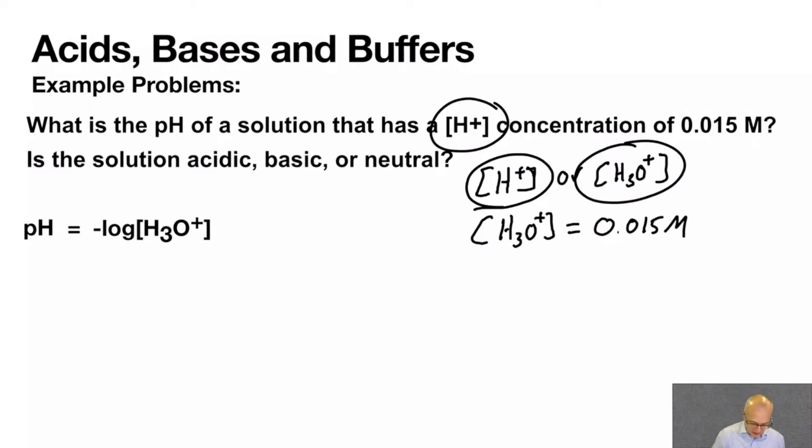Calculate pH. All you've got to do is plug it in to the formula. Equals negative log of 0.015 molar. Grab your handy-dandy calculator. Let me use my phone calculator. So I have negative log. And I get a pH of 1.82. There we go. Which is acidic.